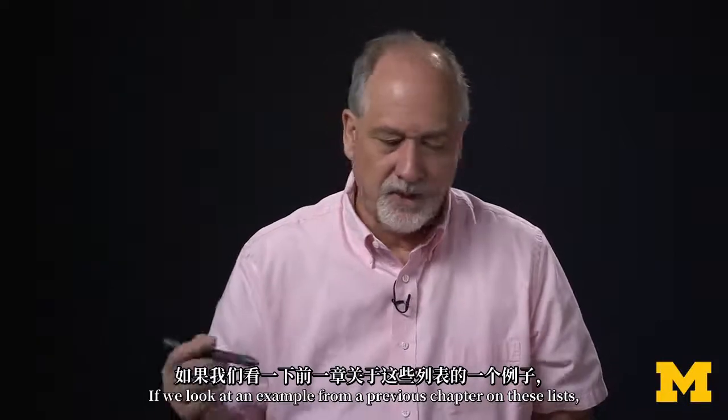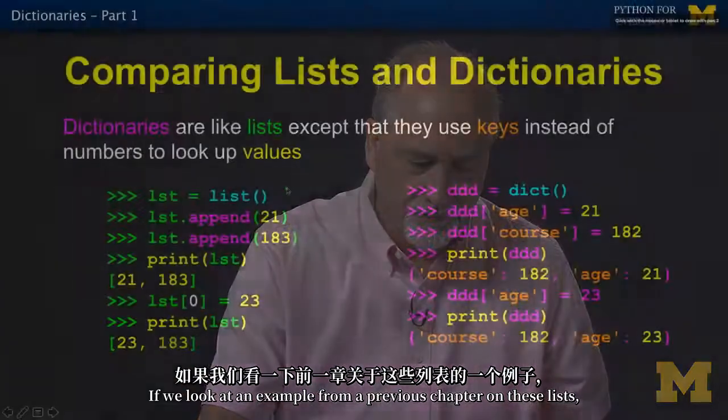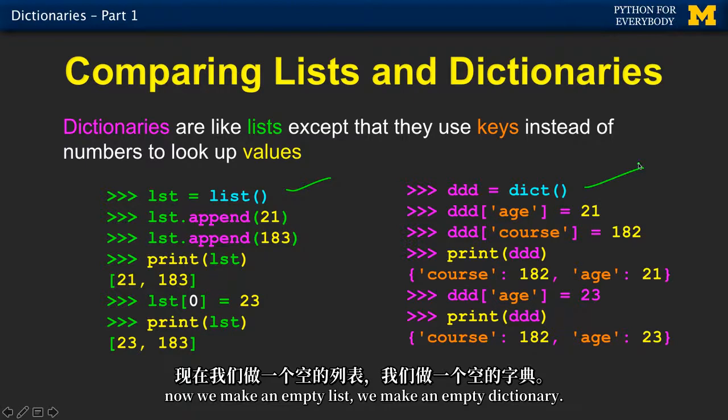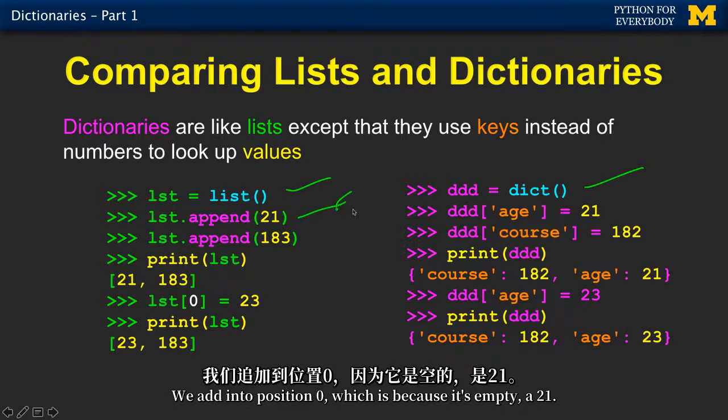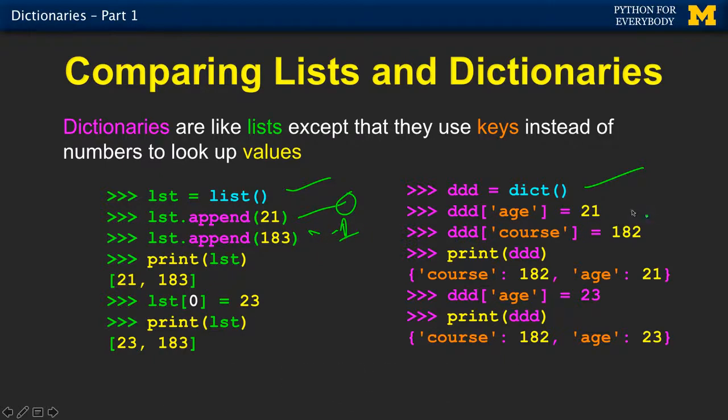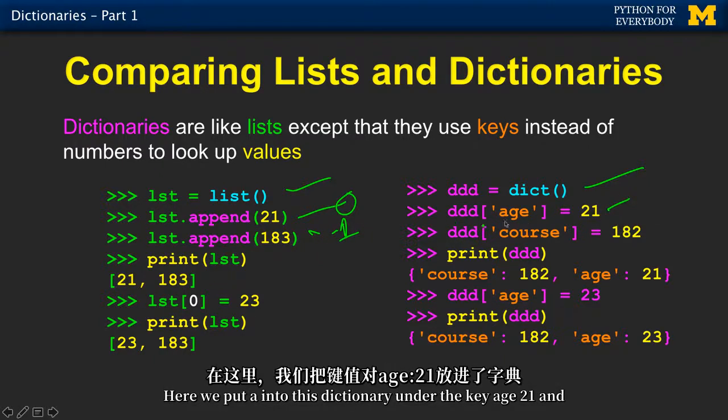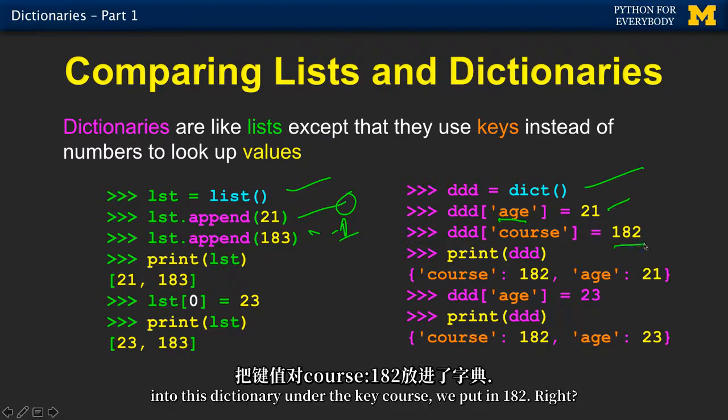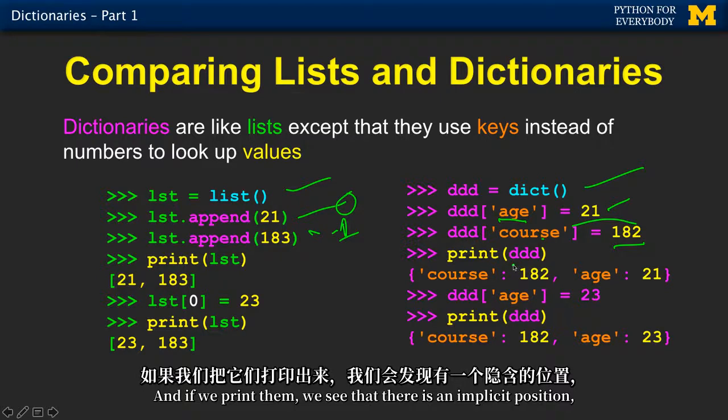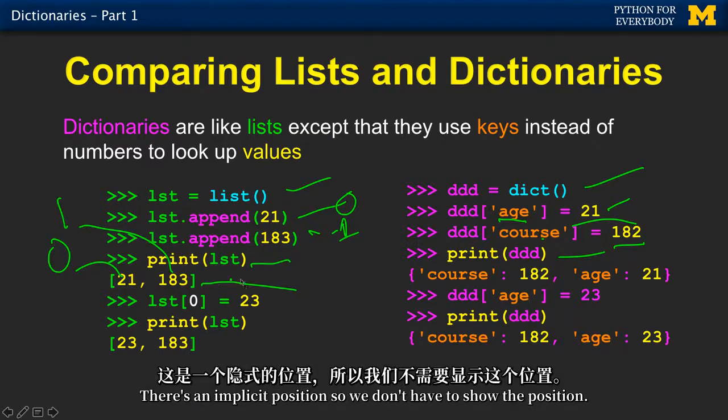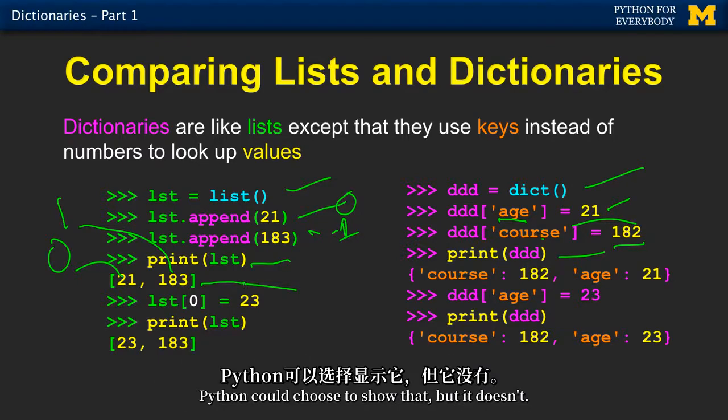If we look at an example from a previous chapter on these lists, we make an empty list, we make an empty dictionary. We add into position zero, which is, because it's empty, a 21, and we put in position one a 183. Here we put into this dictionary under the key age 21, and into this dictionary under the key course, we put in 182. And if we print them, we see that there is an implicit position, position zero and position one. There's an implicit position, so we don't have to show the position. I mean, Python could choose to show that, but it doesn't.